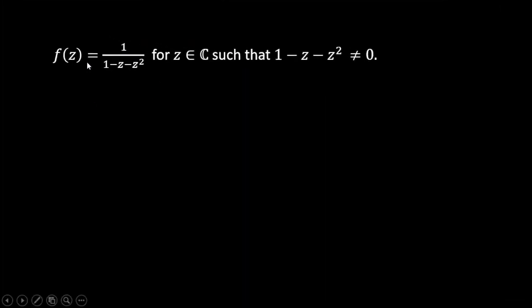The function is 1/(1 - z - z²) for z belongs to the set of complex numbers and the denominator is such that it's not equal to zero.